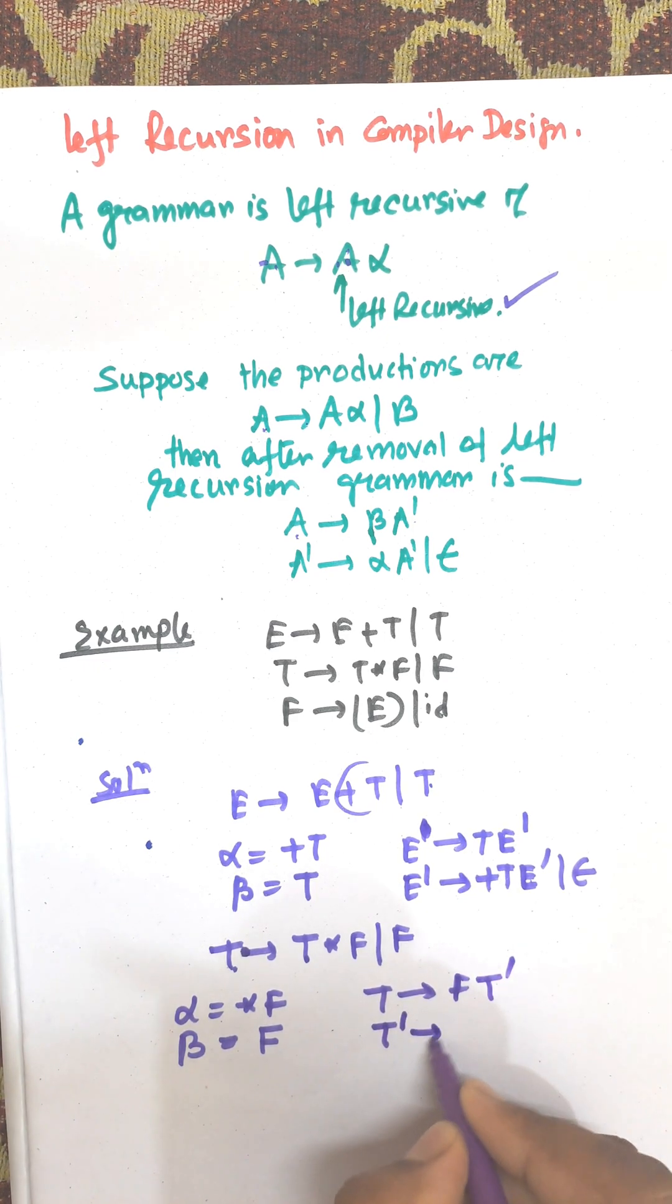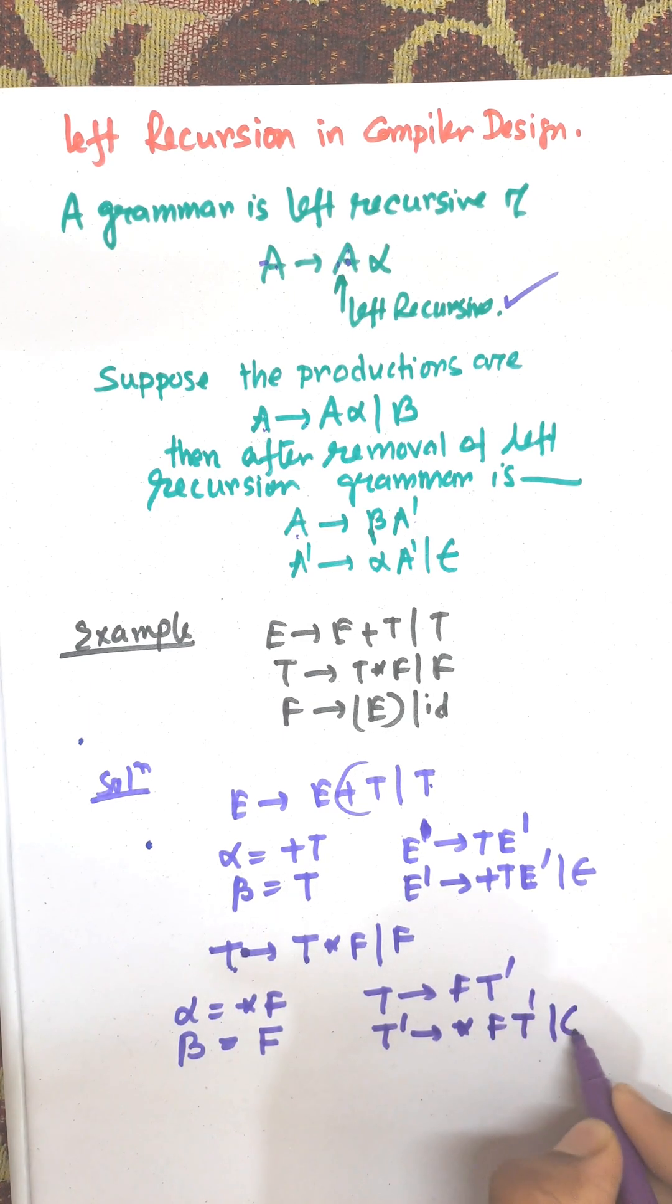And from T', there is αE'. Alpha is *F, so T' → *FT' and epsilon will be there.